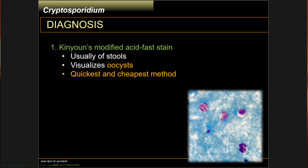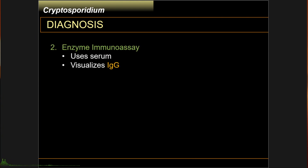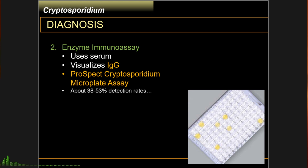The diagnosis of Cryptosporidium is primarily through microscopy using Kinyoun modified acid-fast stain. You examine the patient's stool and look for the presence of sporulated oocysts — this is very quick and easy, and many laboratories have this technique, making diagnosis relatively simple. Another diagnostic method is enzyme immunoassay, which uses serum rather than stool samples to detect immunoglobulins associated with Cryptosporidium infections. You can also use a microplate assay such as an ELISA well or plate.